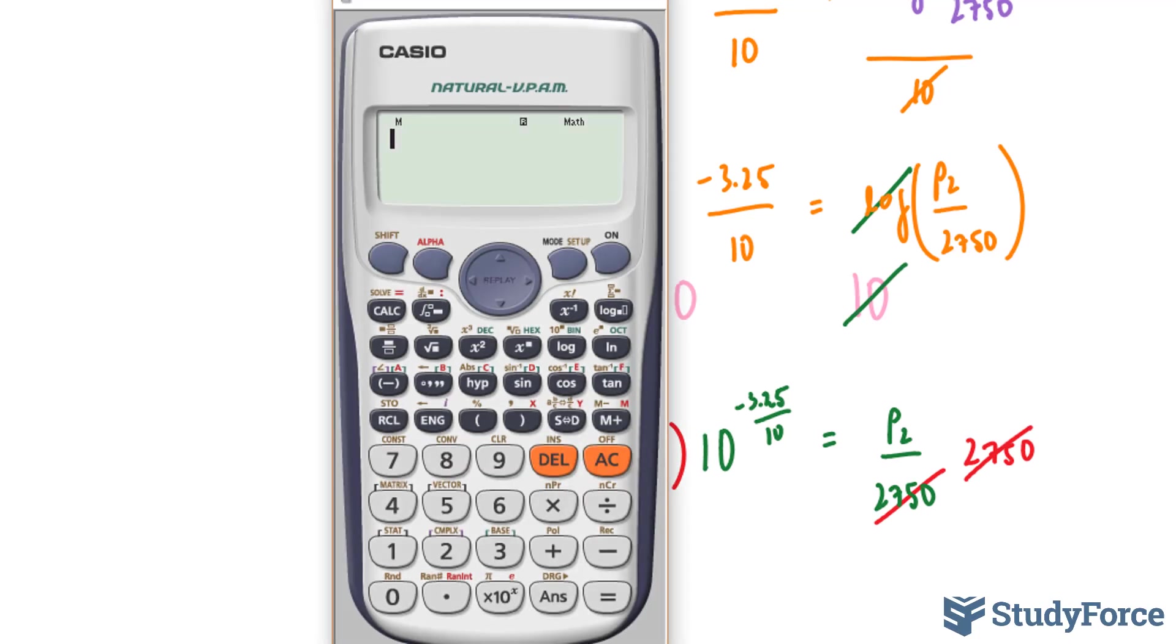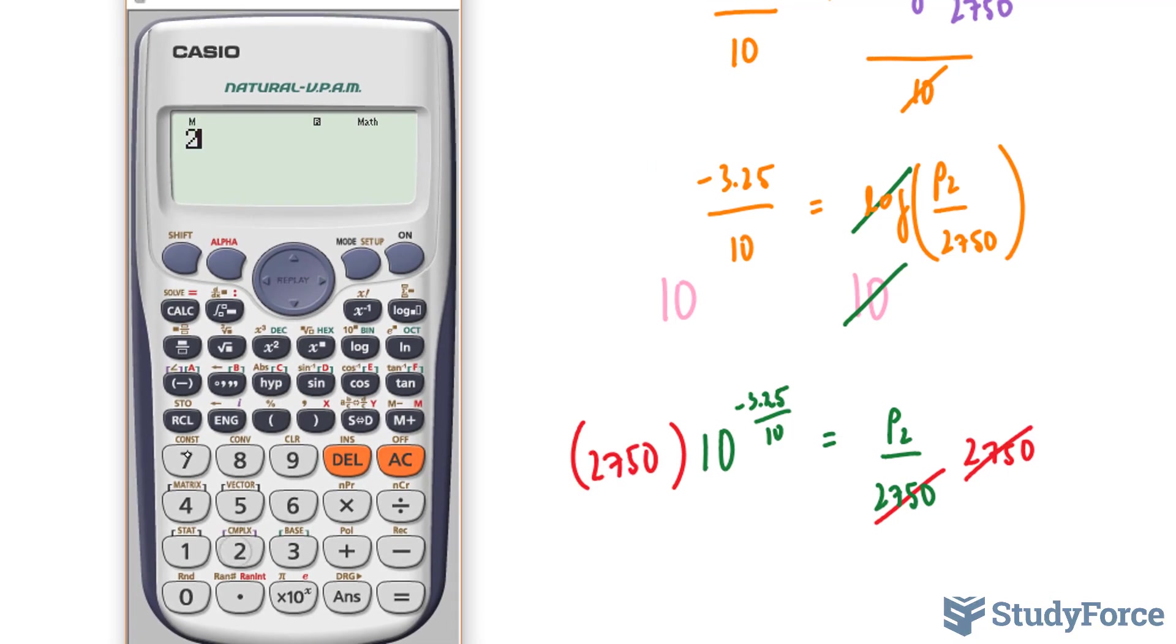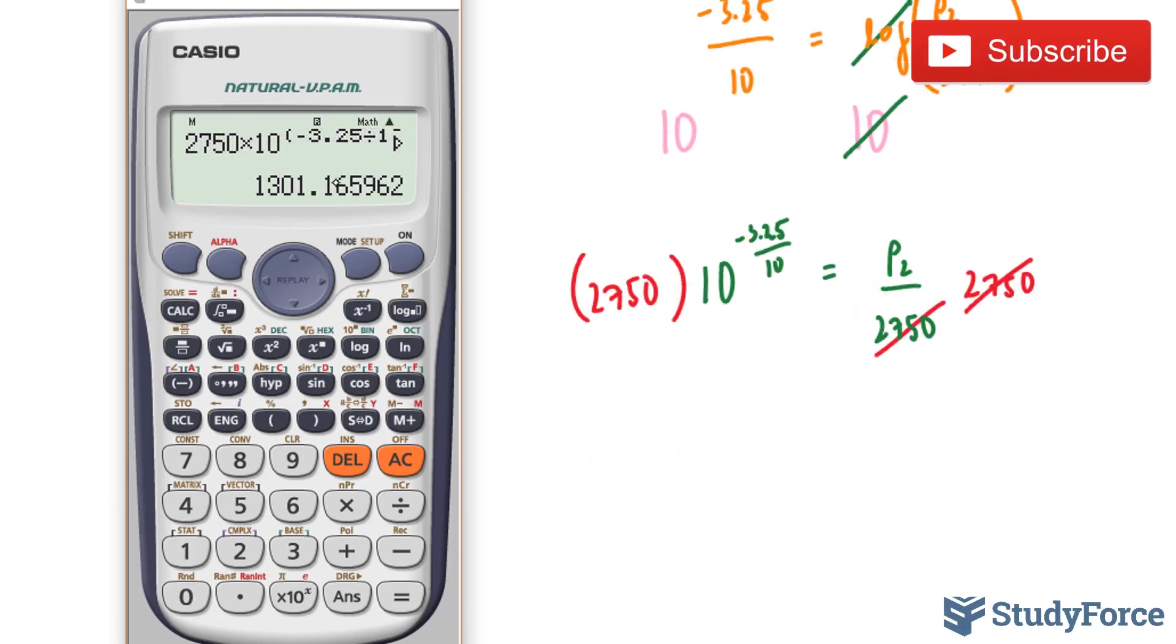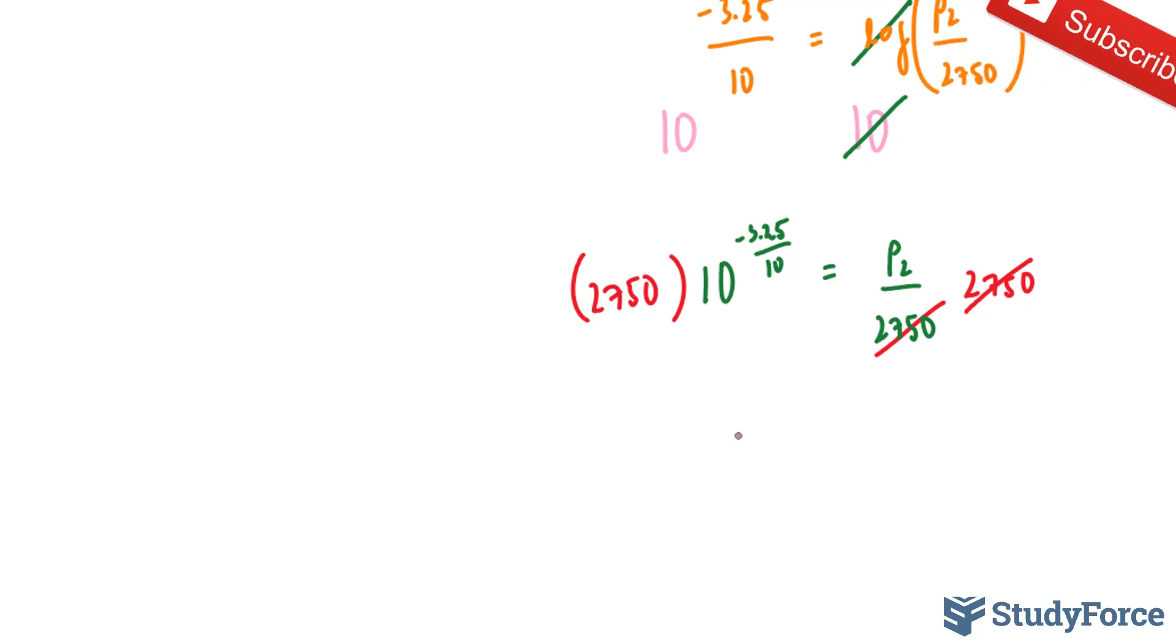So on our calculator, we'll take 2750 multiplied by 10 to the power of negative 3.25 over 10, which gives us 1301.16. So 1301.16 is our P2.